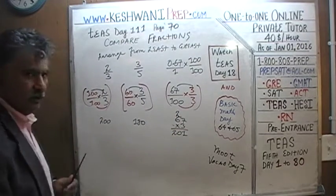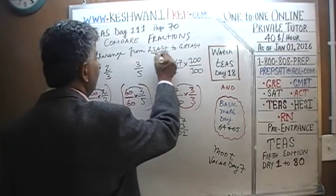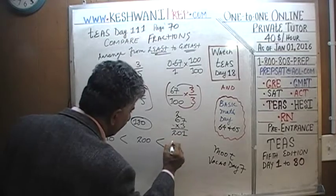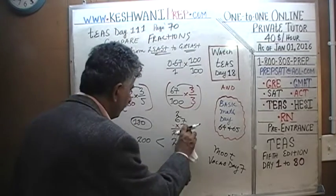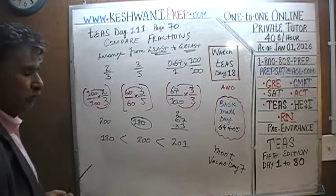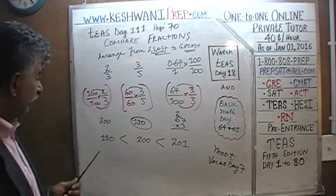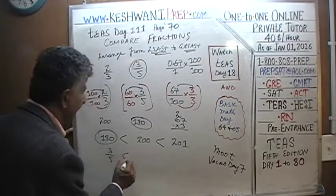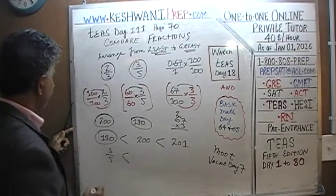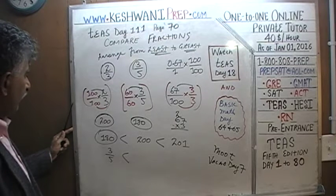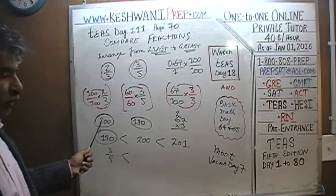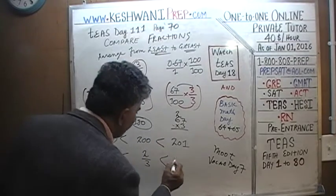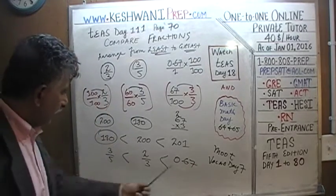67 times 3 is 201. So to arrange from least to greatest: the least is 180, then 200, then 201. We simply put in the corresponding original fractions. 180 came from 3/5. 200 came from 2/3 — which makes perfect sense, because 200 over 300 is just 2/3. And finally 201 came from 0.67. They are arranged from least to greatest: 3/5, 2/3, 0.67. That's one way of doing it.